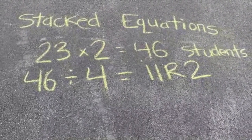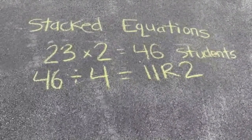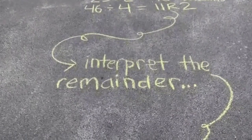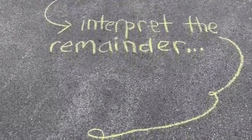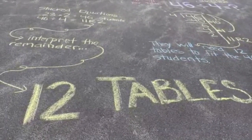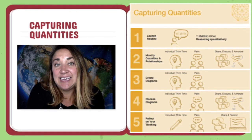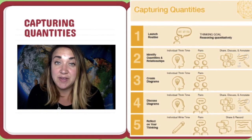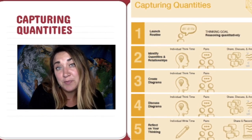So what that means is they're going to need 12 tables to fit the 46 students, because if they only had 11 tables, there would be 2 students left without a seat. So we'd need 12 tables. I want to show my work as stacked equations: the first step was 23 times 2, which gave me 46 students, and then 46 students divided by seats of 4, which gave me 11 remainder 2. It's always important to interpret the remainder — you would say you need 12 tables for those two classes to fit in. Let's take a look at some of the work that the students produced after solving the problem on their own, and how they represented quantities and relationships using a diagramming process independently after going through that routine together.